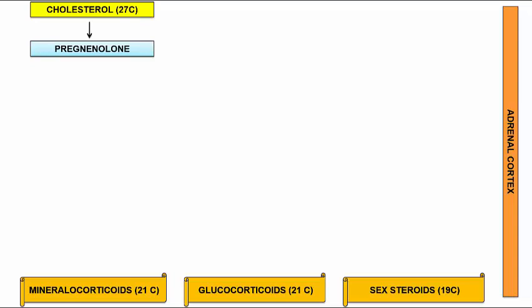In the first step, cholesterol is converted to pregnenolone by the enzyme side-chain cleavage enzyme, also called desmolase. As the name suggests, the side carbon chain is cleaved off, and the 27-carbon cholesterol becomes 21-carbon pregnenolone. This reaction is regulated by the anterior pituitary hormone ACTH.